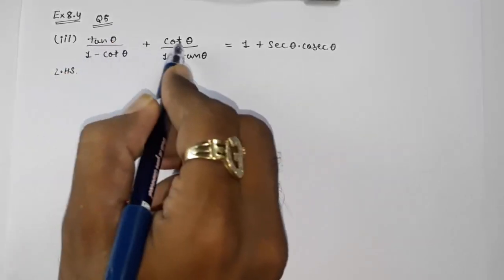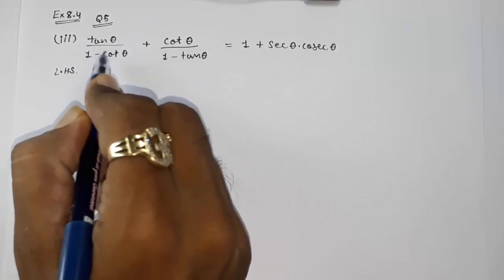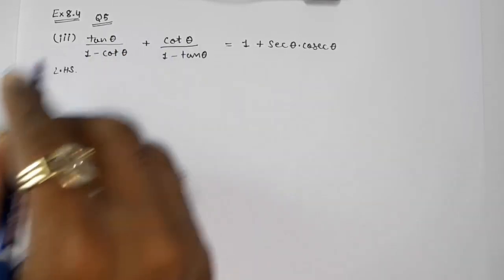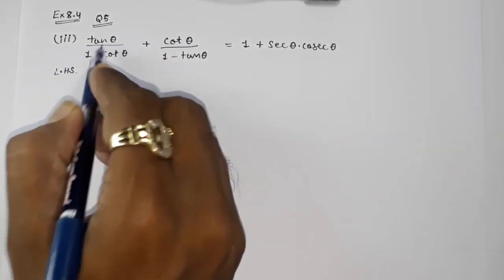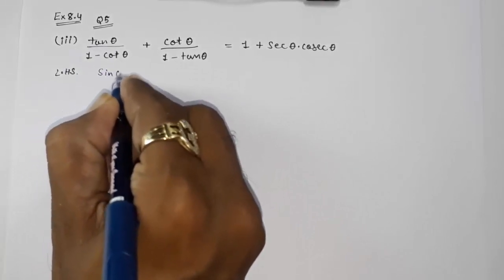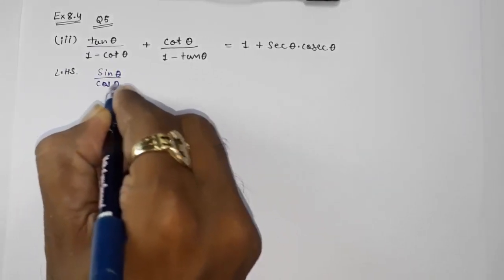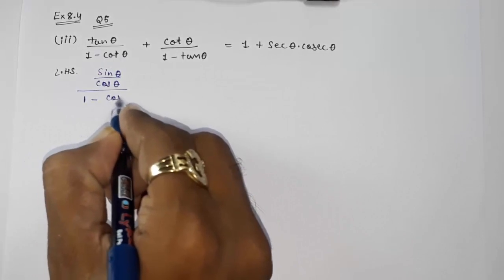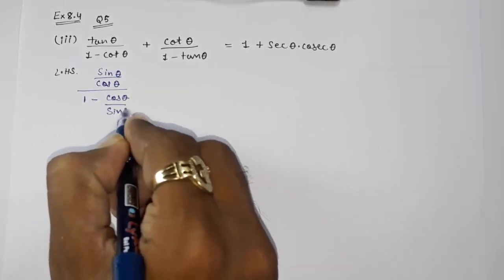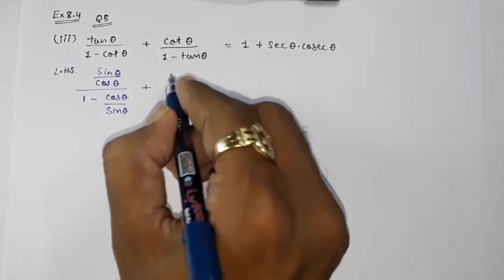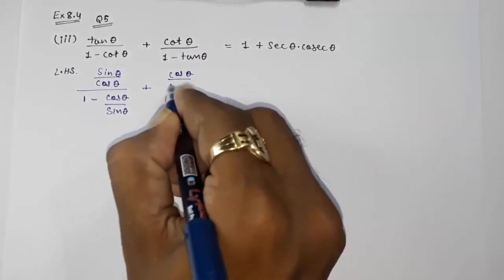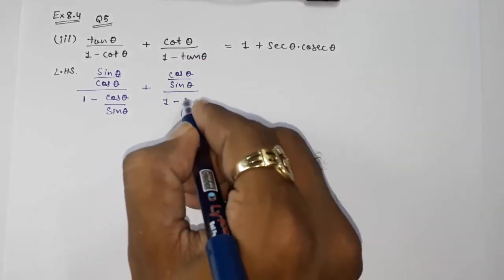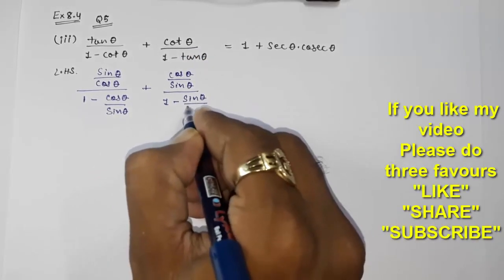They have given us a hint that we have to convert all terms into sin θ and cos θ. So first we are going to convert everything. tan θ is equal to sin θ upon cos θ, and cot θ is equal to cos θ upon sin θ. So the expression becomes: sin θ upon cos θ, whole upon 1 minus cos θ upon sin θ, plus cos θ upon sin θ, whole upon 1 minus sin θ upon cos θ.